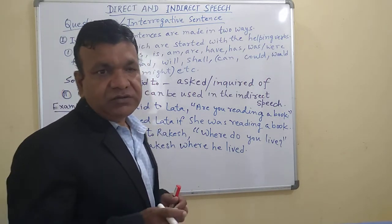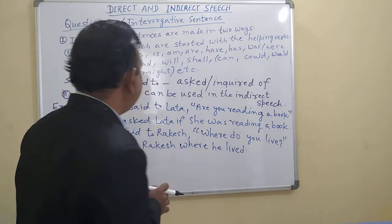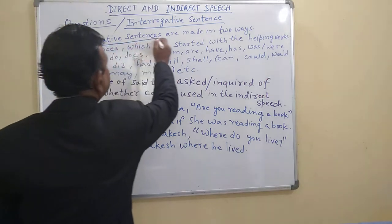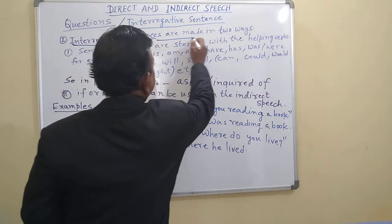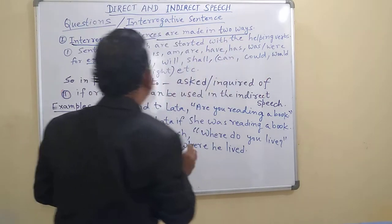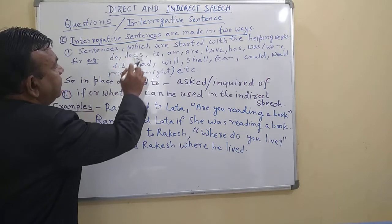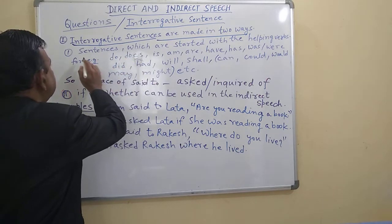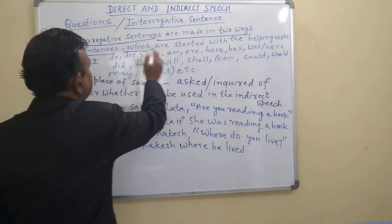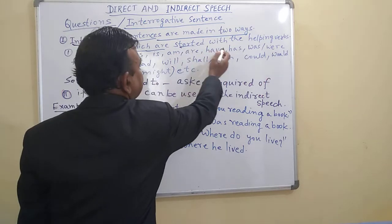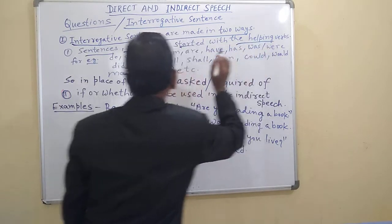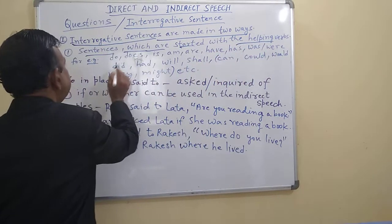So my dear children, interrogative sentences are made in two ways. You can make interrogative sentences in two ways. First are those which are started with the helping verbs. Helping verbs means: